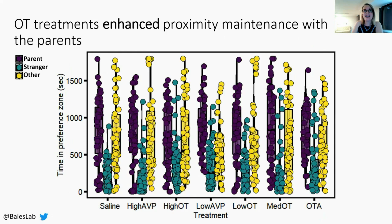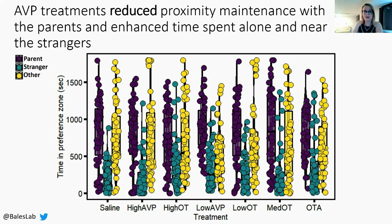The parent preference results revealed several very interesting patterns. On the y-axis, we have time spent in the preference zone of the parents in purple, strangers in aqua, and other in yellow, with data separated by treatment groups on the x-axis compared to saline. Low oxytocin, medium oxytocin, and the oxytocin antagonist resulted in increased time spent in proximity to the parents, suggesting that oxytocin manipulations enhance species-typical proximity maintenance behaviors. High vasopressin decreased time spent in proximity to the parents and increased time spent alone, while low vasopressin increased time spent in proximity to the strangers, suggesting that agonism of the vasopressin system disrupts species-typical preferences for attachment figures.